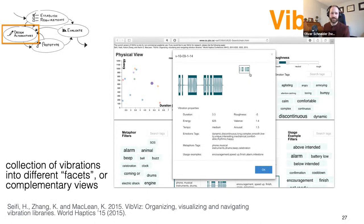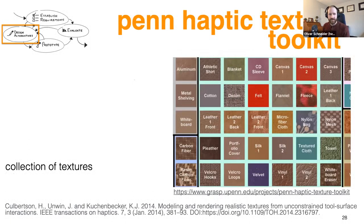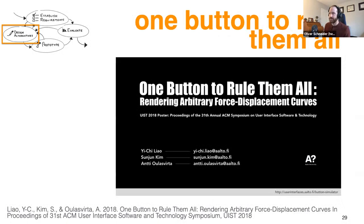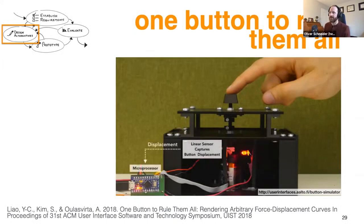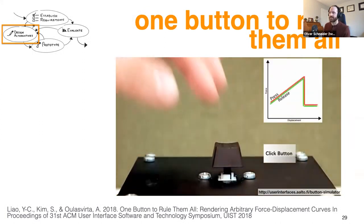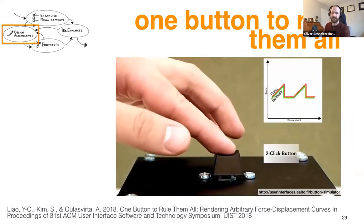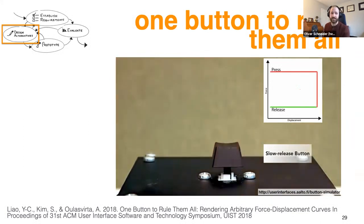I also want to highlight the Penn Haptic Texture Toolkit, a collection of 100 or more different textures by Heather Culbertson. A cool project called One Button to Rule Them All is an open-source system for different arbitrary buttons that also has a set of examples you can take and modify. If you're building a system with a button and want to recreate it, you can look at this. There are lots more of these systems — I'm just highlighting some good starting places.